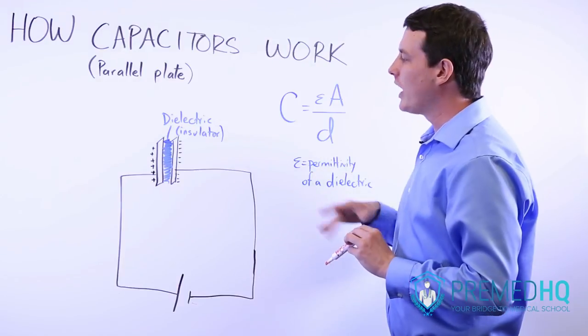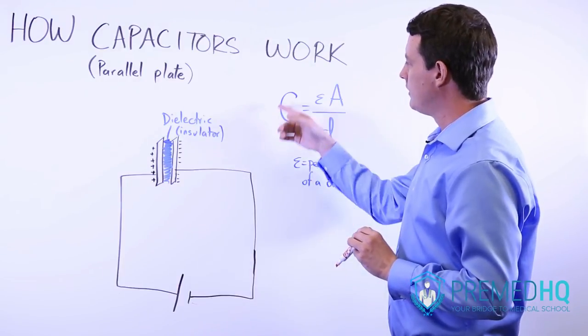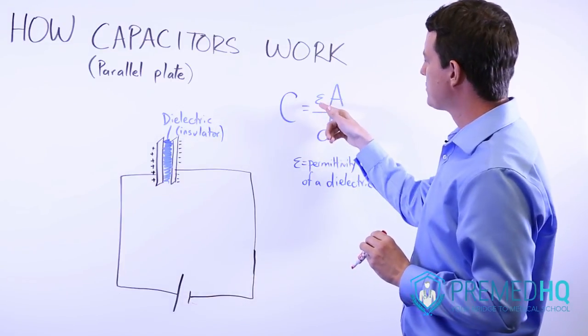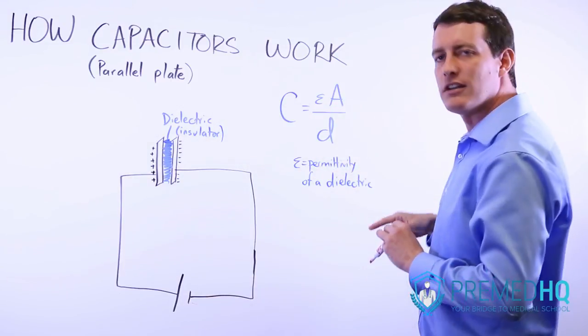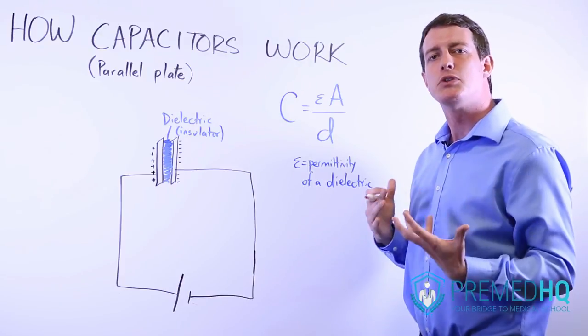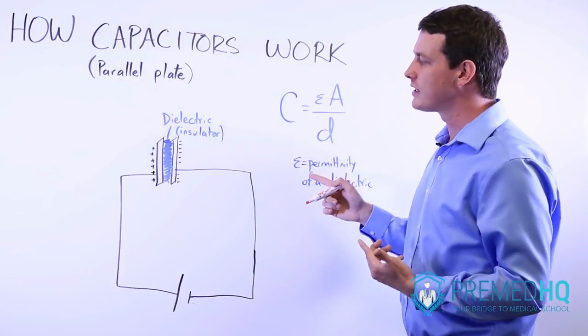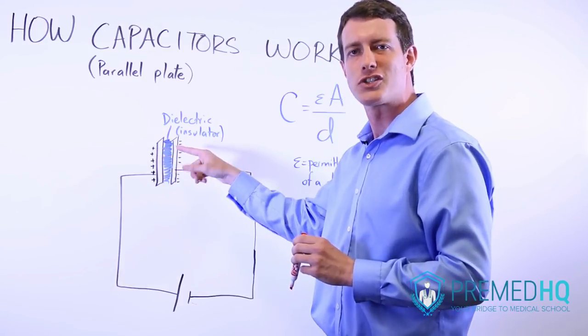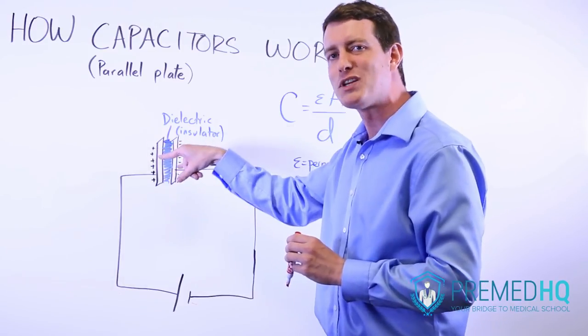The way that you calculate this: capacitance equals epsilon, which is the permittivity of a dielectric, how much it enables those dipoles to exist. Because what we have here is a dipole. We have a positive charge there and a negative charge on the other side, and that is electrical potential energy.